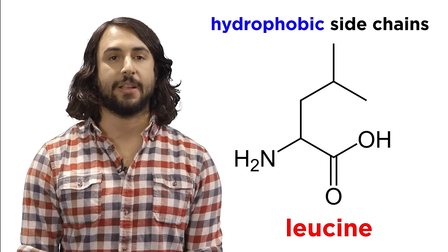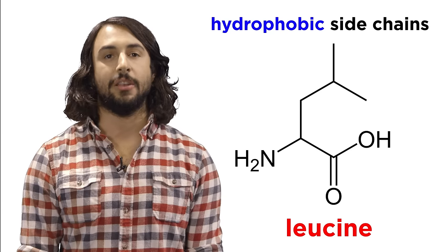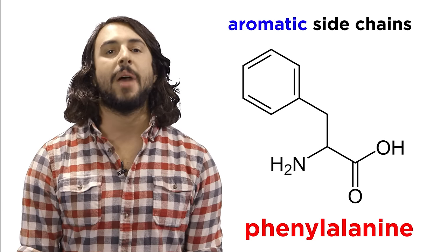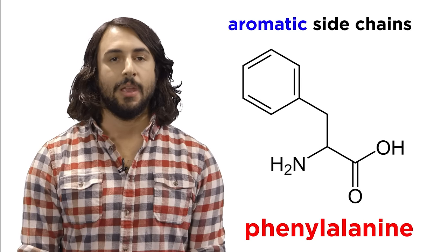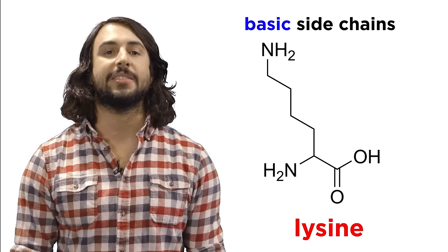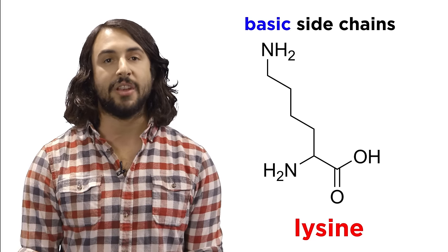Some of them will be hydrophobic, like leucine. These are the ones with R groups that are alkyl substituents. Some of them have R groups that are aromatic, like phenylalanine. Some have R groups that are basic, like lysine, because of the lone pair of electrons on the nitrogen atom.